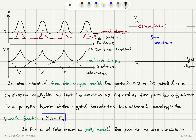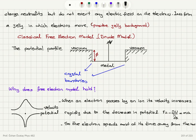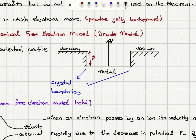In this model, known as the jelly model, the positive ion cores maintain charge neutrality but do not exert any electric field on the electrons — the ions form a jelly in which the electrons move. This is essentially the positive jelly background for the electrons. In the classical free electron Drude model, the potential profile has the vacuum level and zero potential inside the metal.